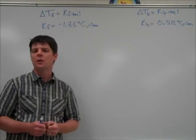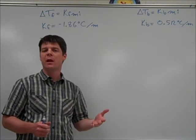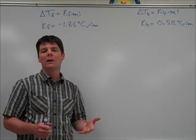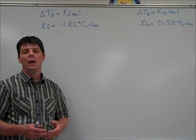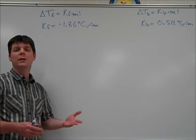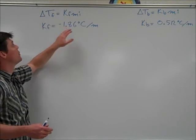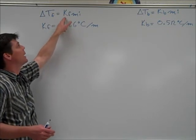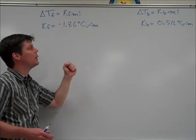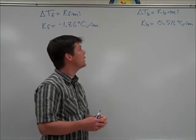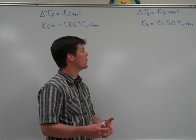This question asks us to determine the altered boiling temperature and freezing temperatures for one molal solutions of both sodium chloride and glucose. In order to solve these problems, we'll need to use the following equations: delta Tf equals Kf times molality times i to determine the change in freezing temperature, and a similar equation to calculate the change in boiling temperature of water.